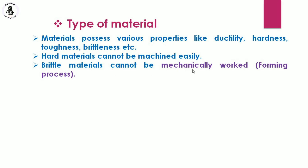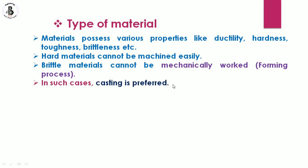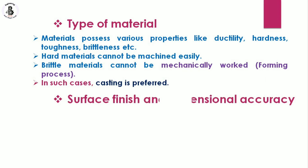Brittle materials cannot be mechanically worked — that is, forming processes are not used because brittle materials have less ductility. For brittle materials, casting should be preferred, or more preferably, the powder metallurgy process. Casting or powder metallurgy is used for brittle materials as they can still achieve good mechanical properties.